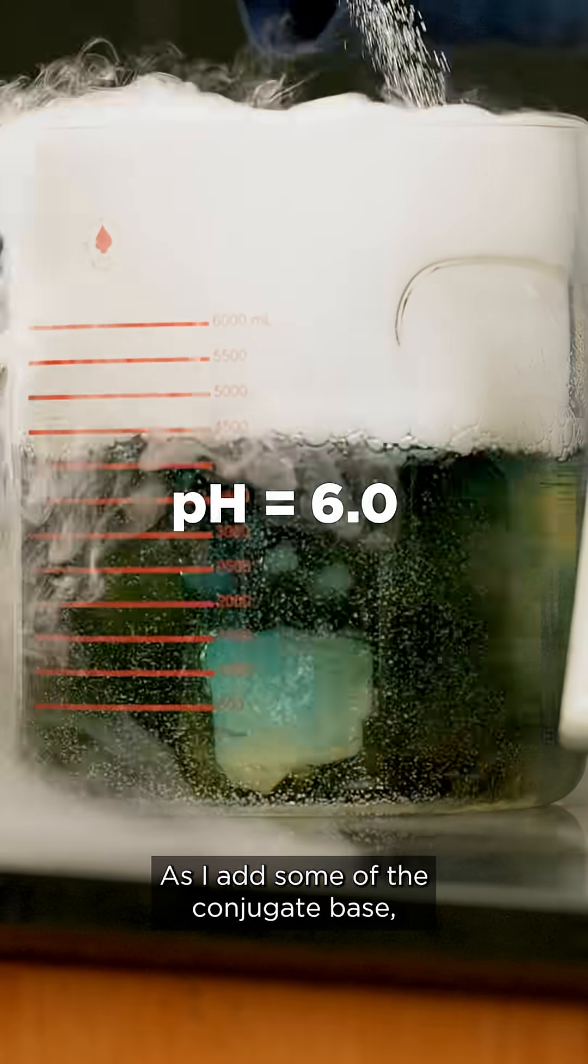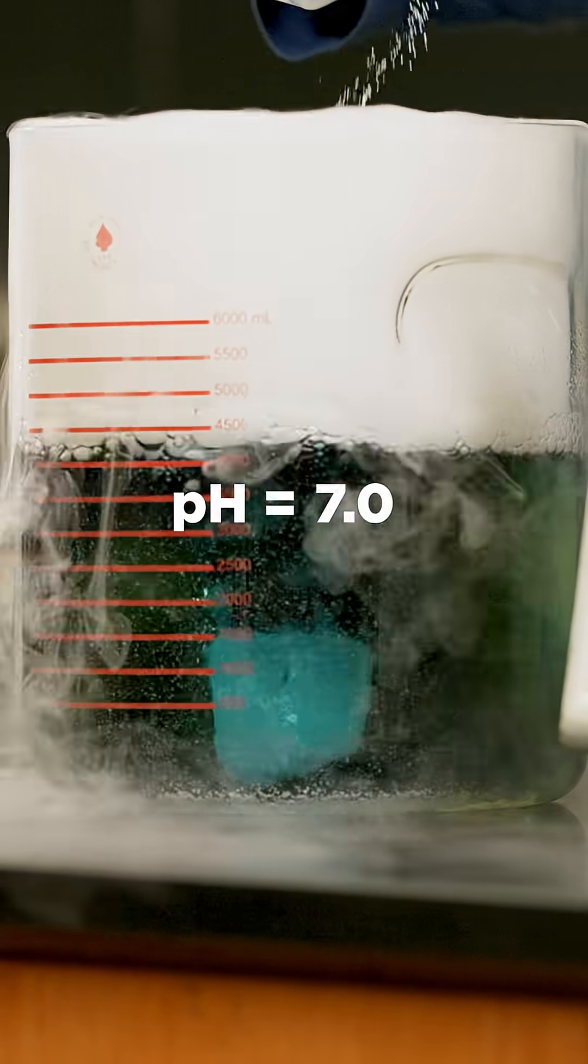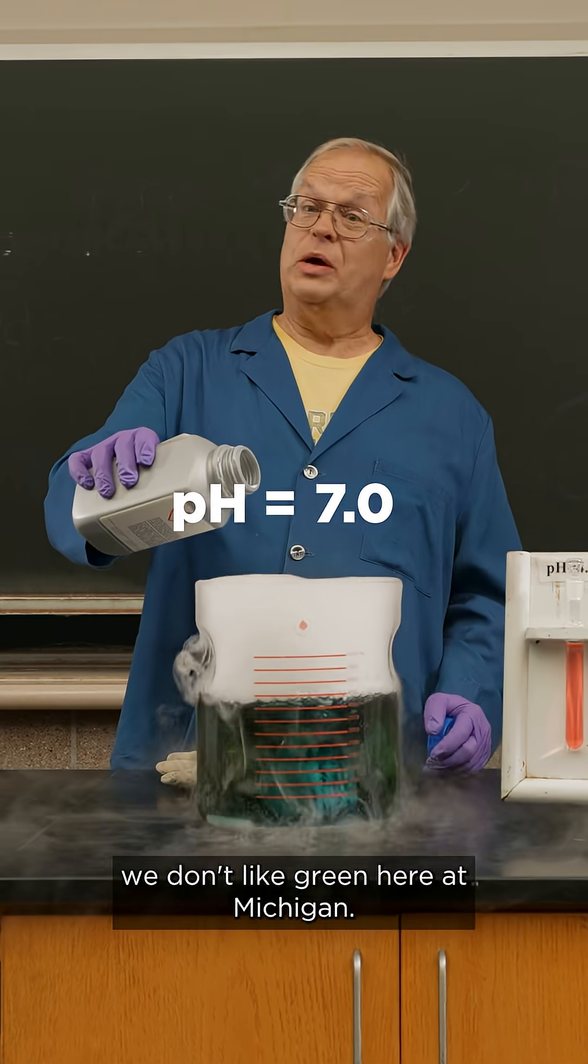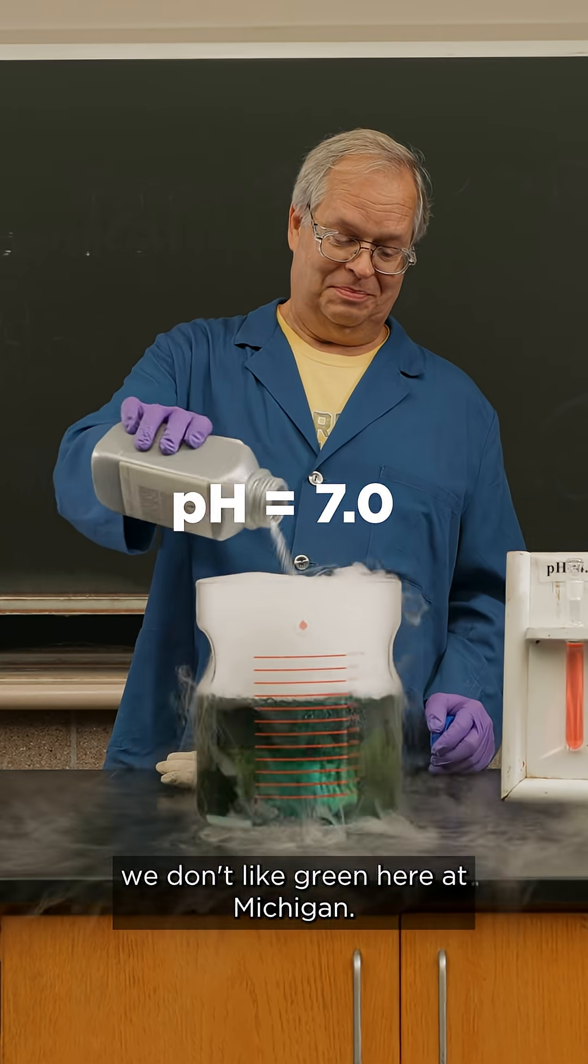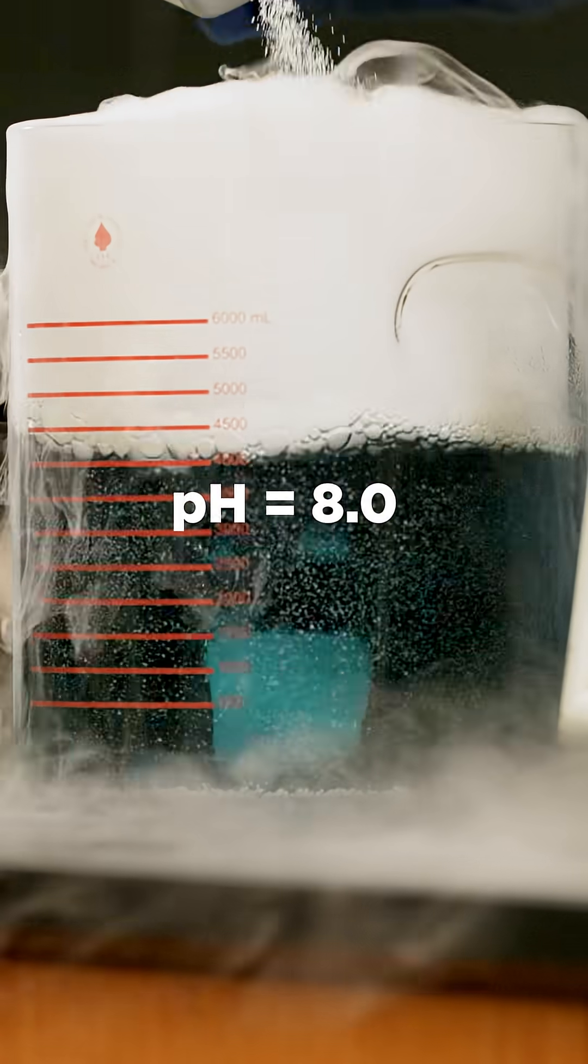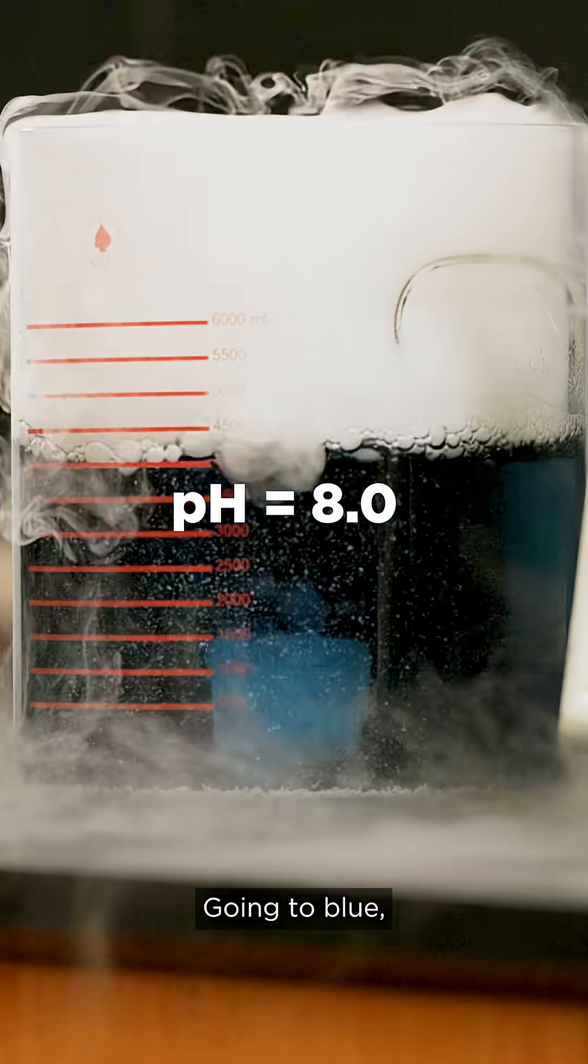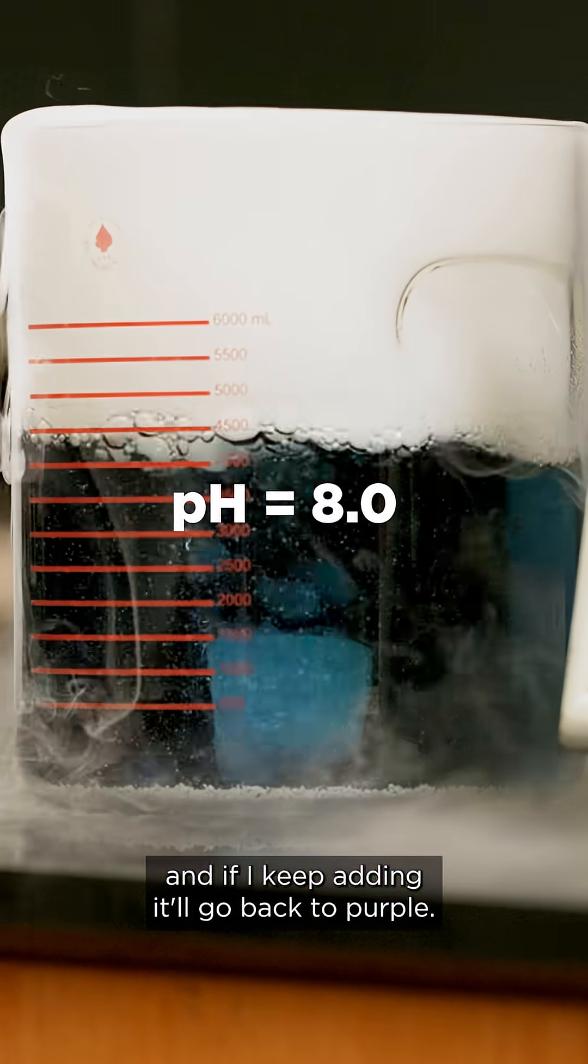As I add some of the conjugate base, we're green. We don't like green here at Michigan. Going to blue. And if I keep adding, it'll go back to purple.